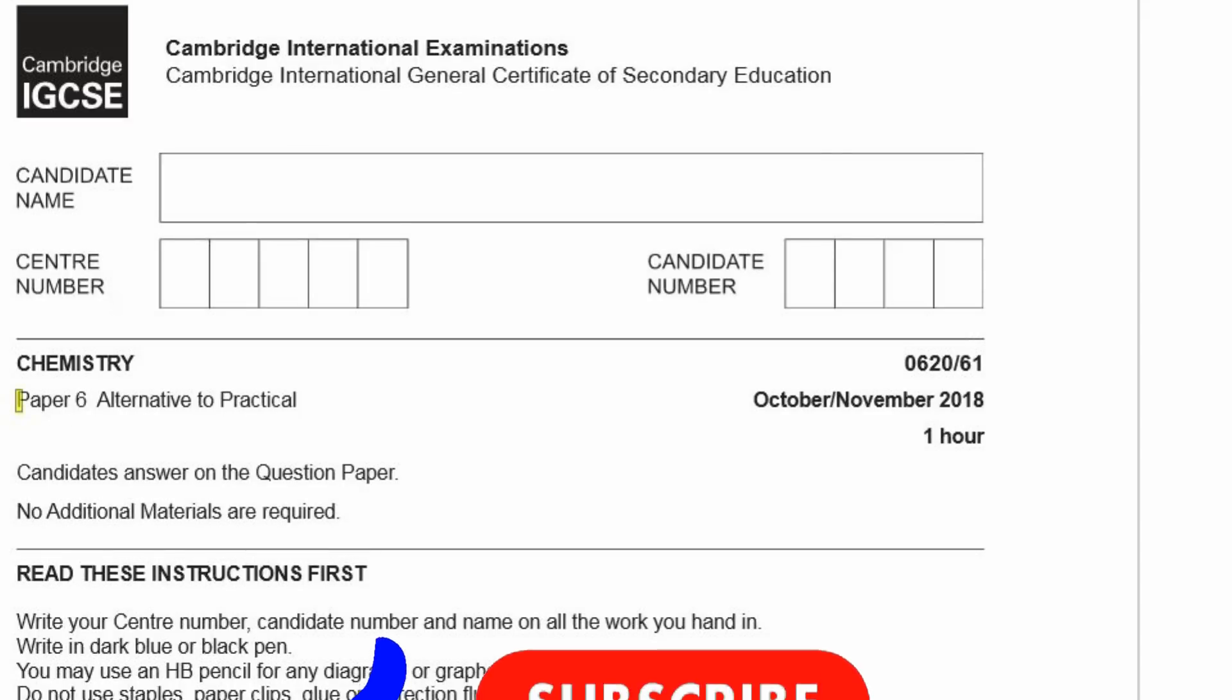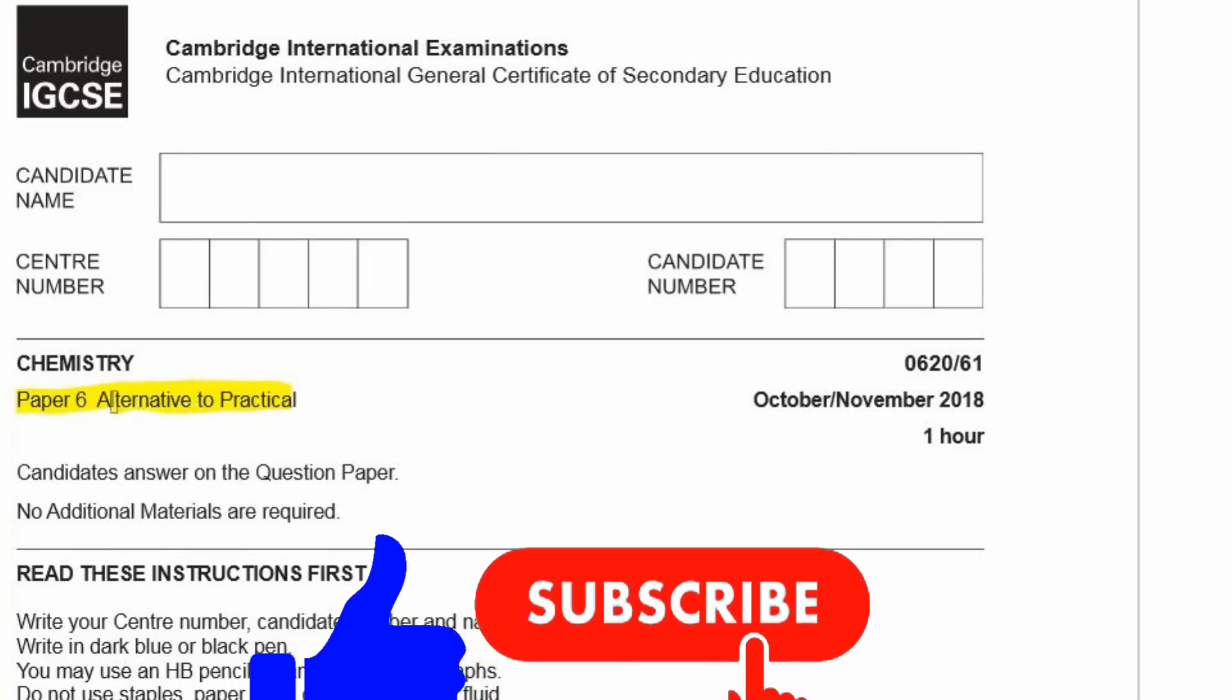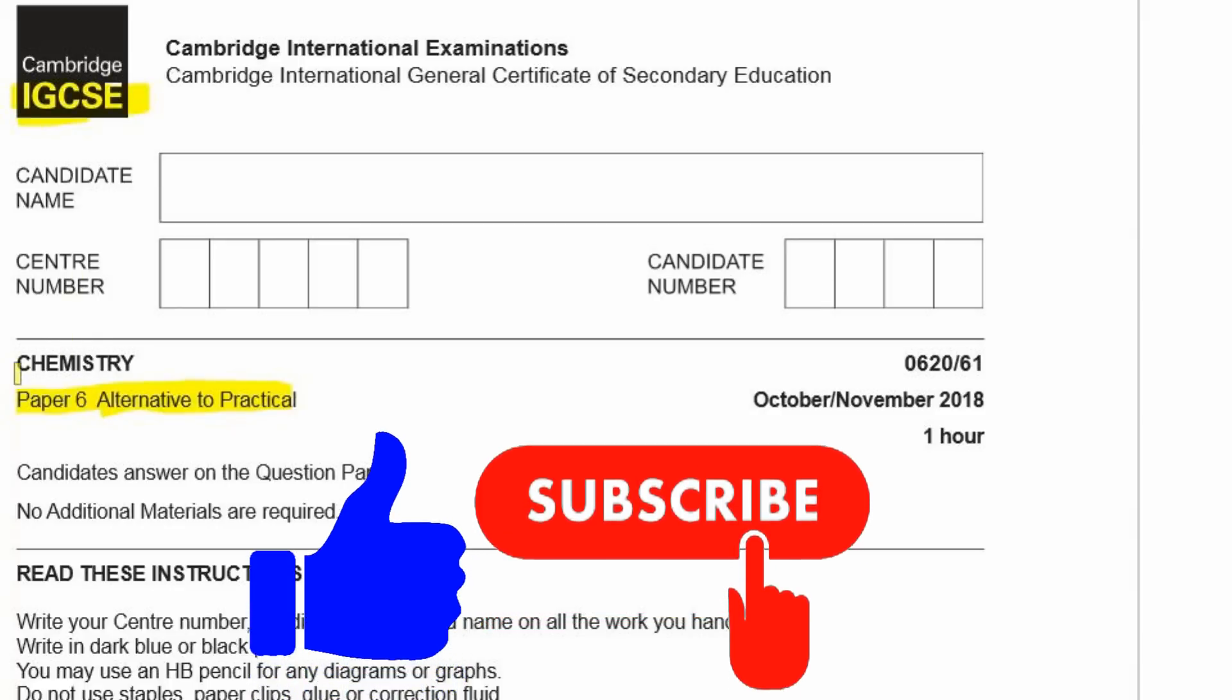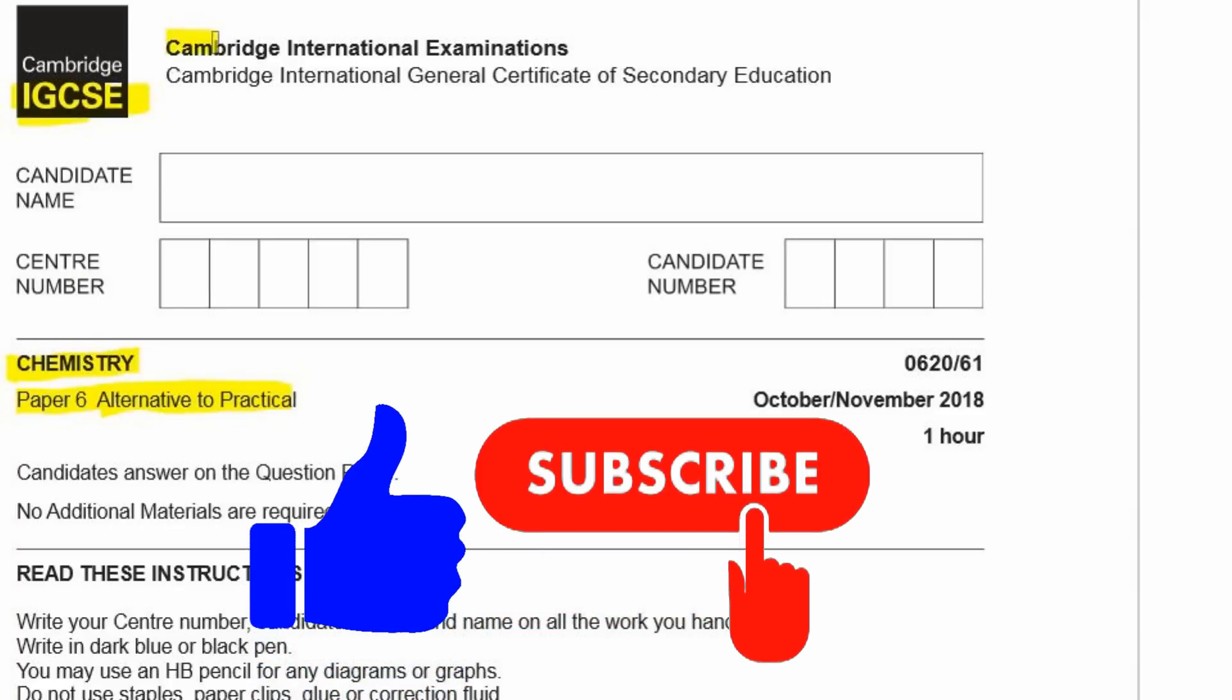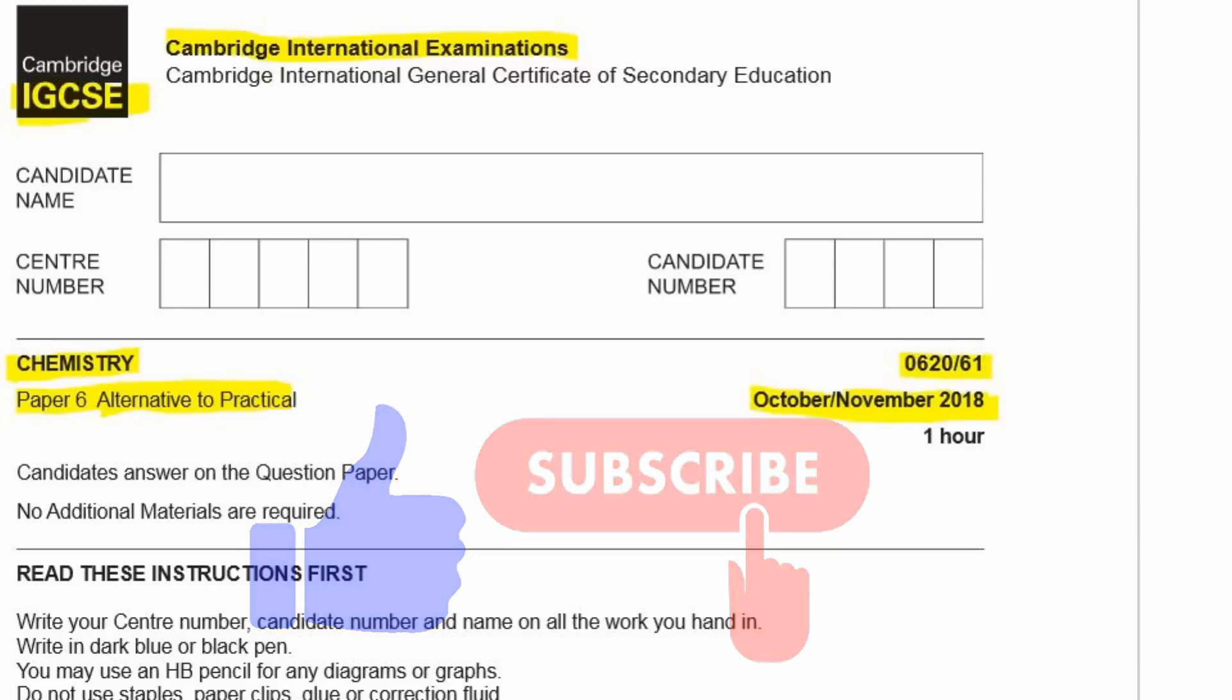All right, so today we're going to look at Paper 6, which is the alternative to the practical for IGCSE chemistry. That's Cambridge International Examination, so CIE. And this is October-November 2018, Variant 1, so it's 0620-61, that's the code. All right, let's get started.